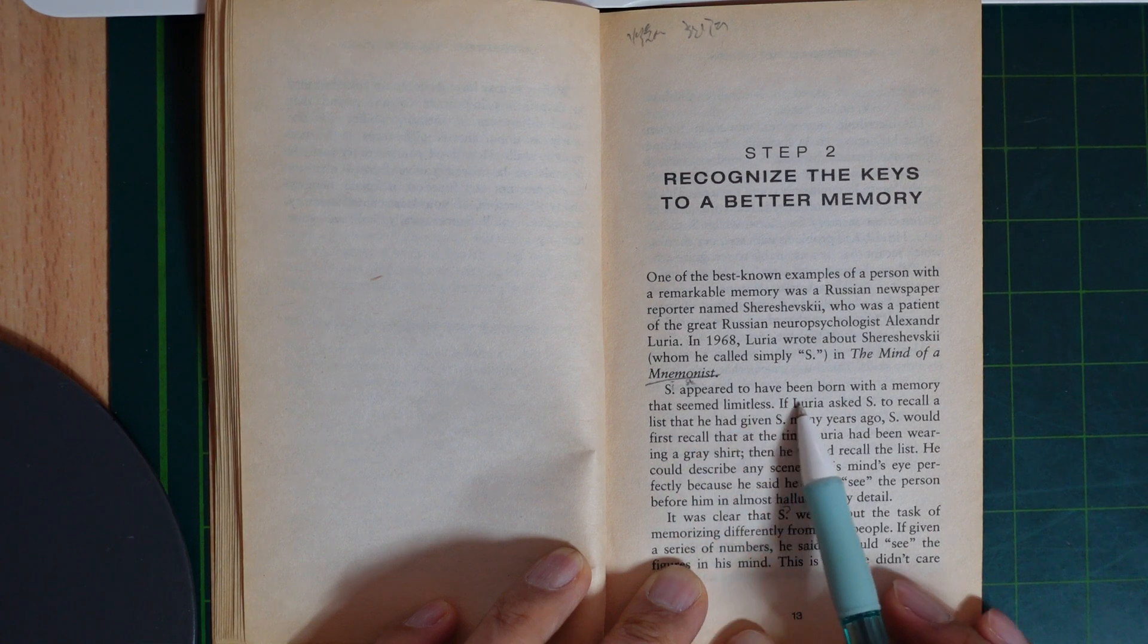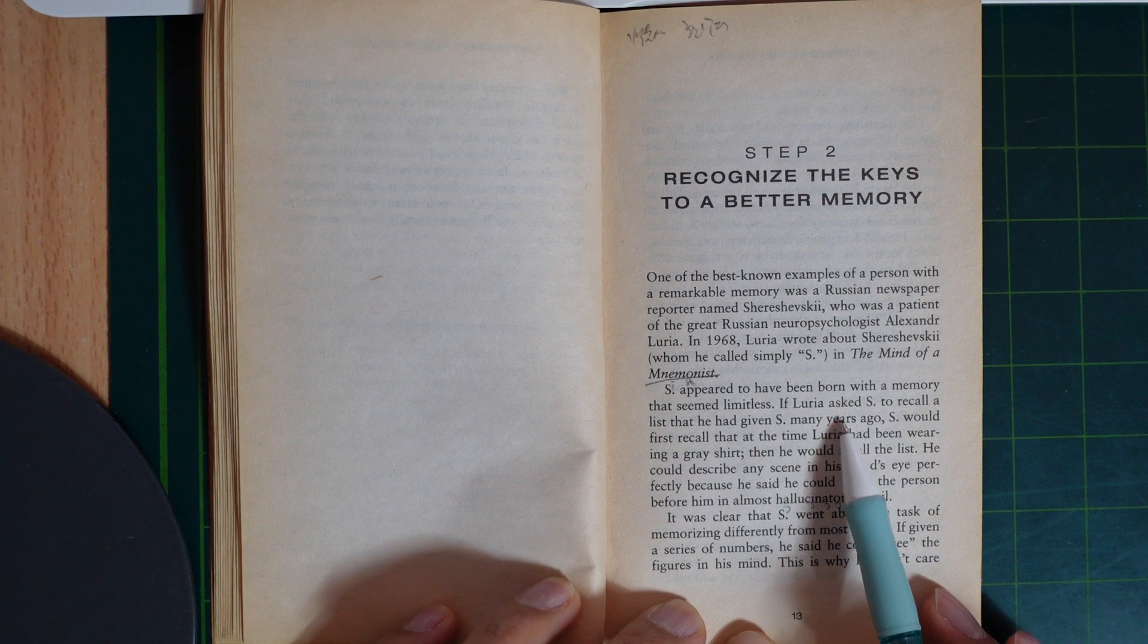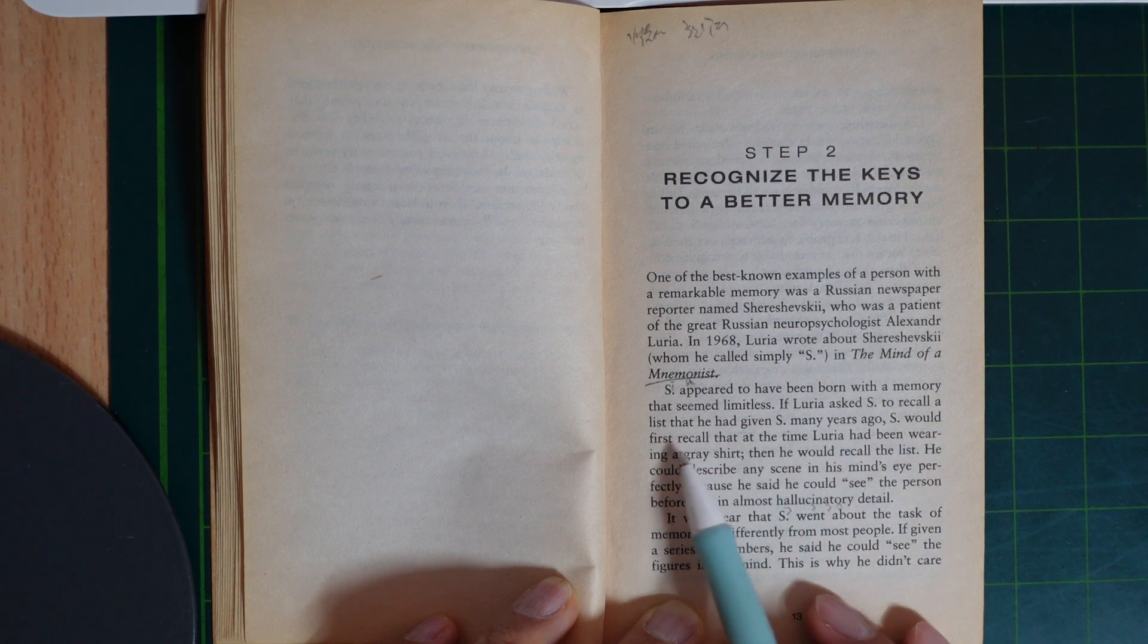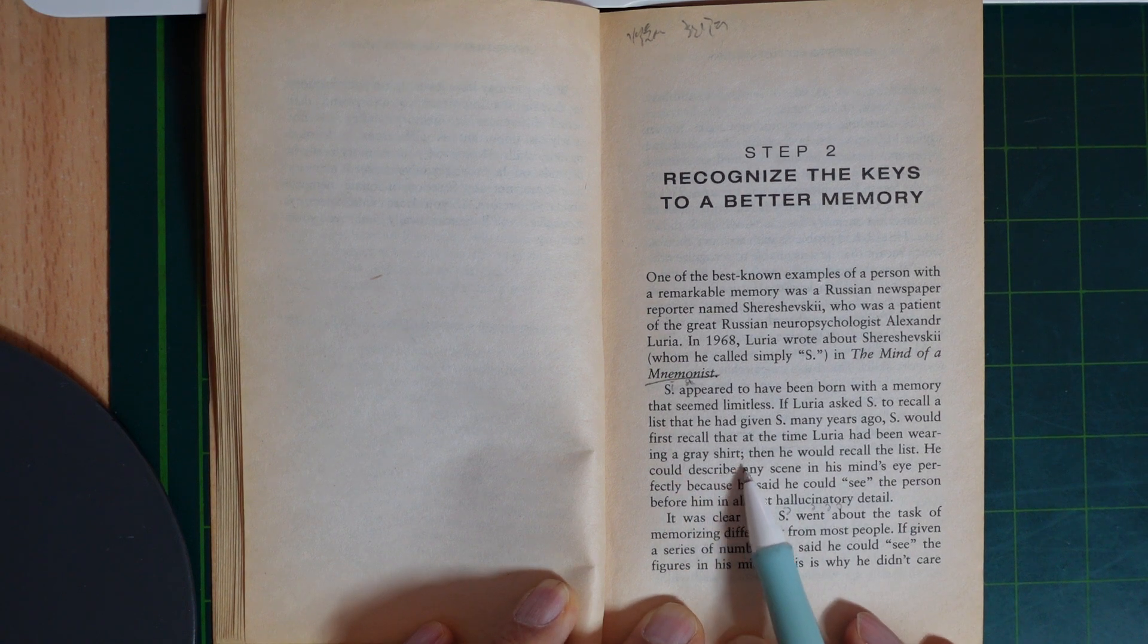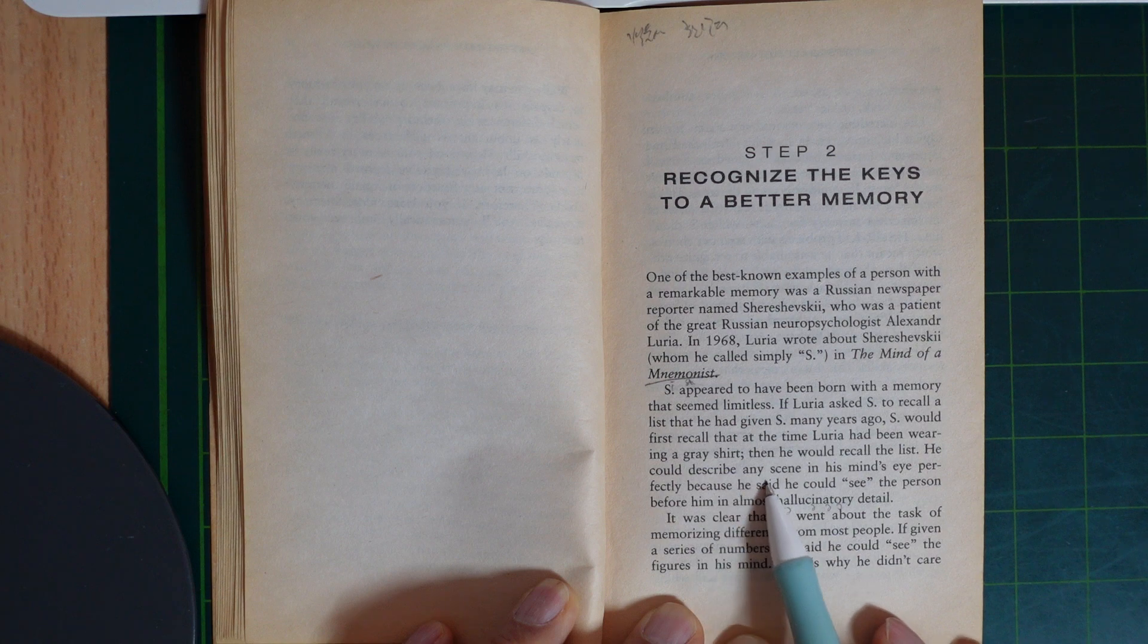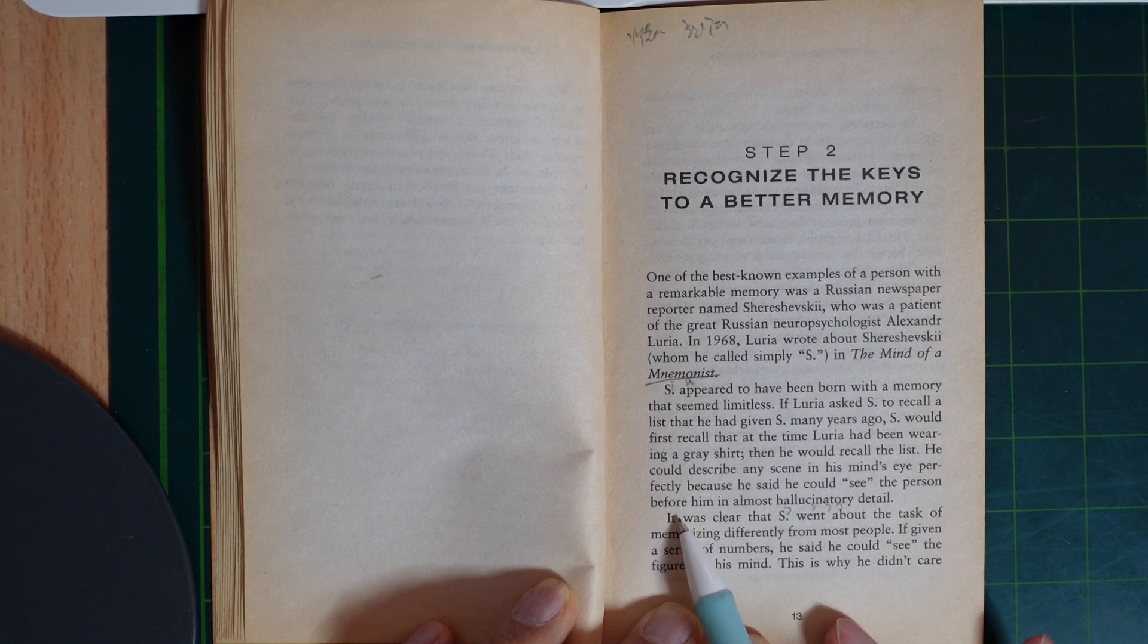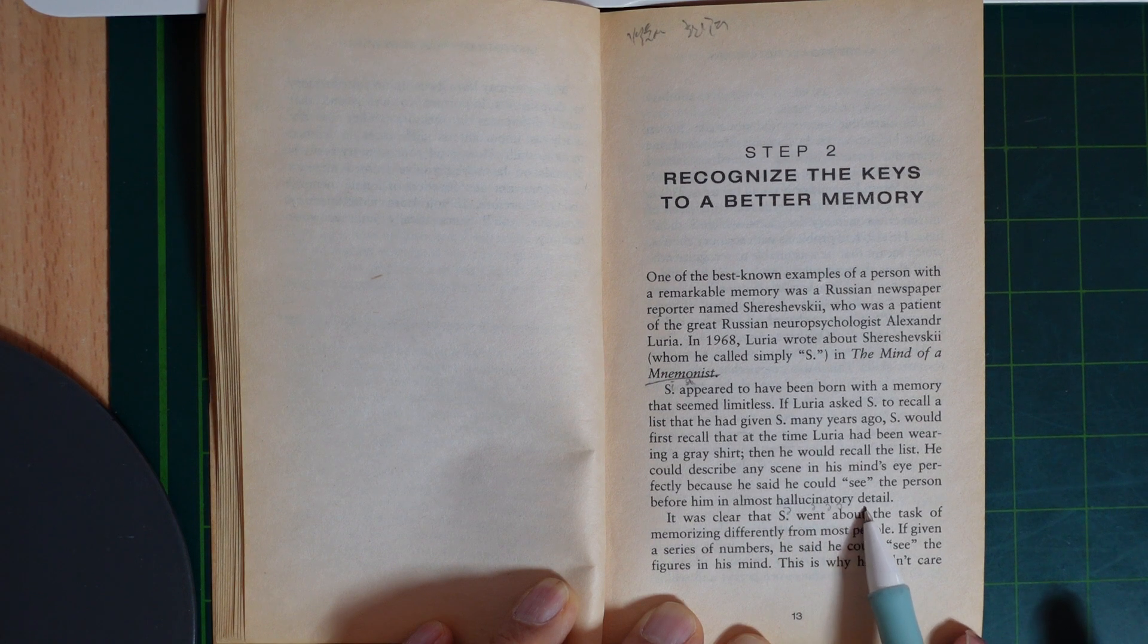S appeared to have been born with a memory that seemed limitless. If Luria asked S to recall a list that he had given many years ago, S would first recall that at the time Luria had been wearing a grey shirt, then he would recall the list. He could describe any scene in his mind's eye perfectly because he said he could see the person before him in almost hallucinatory detail.